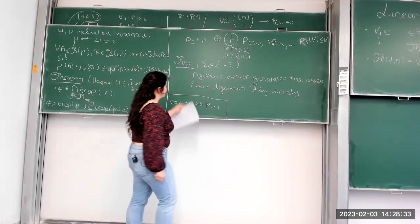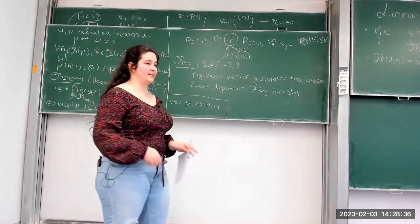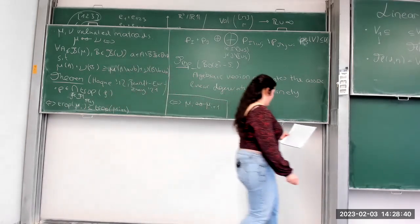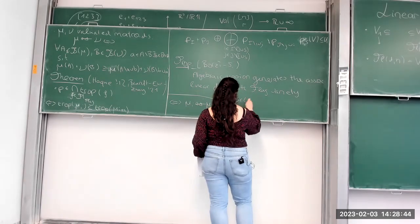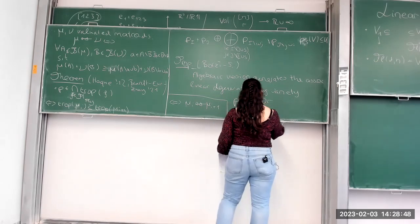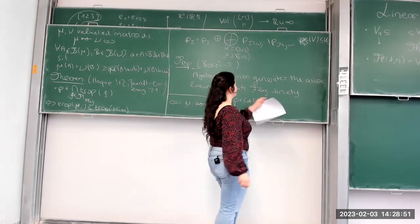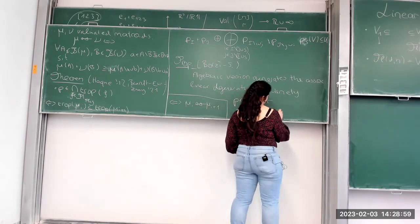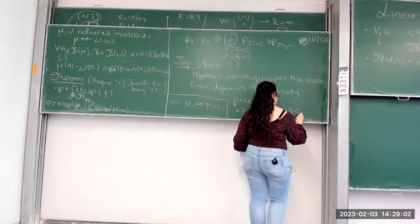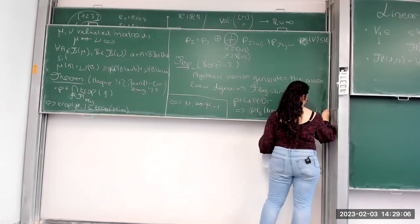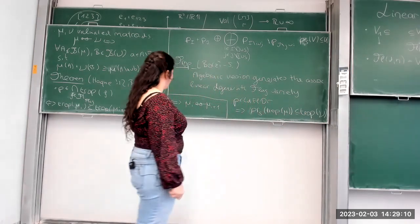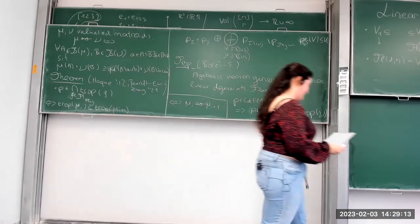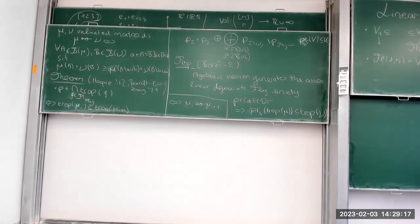What we want to do with these Plücker-type relations is make them describe something that makes sense in the matroid setting and in the tropical setting. We want to show that if we have a point in this linear degenerate flag variety, then the associated tropical spaces are contained inside a tropical projection. Specifically, the projection S of tropical mu_i is contained inside tropical mu_{i+1}. But finding an intrinsic valuated matroid analog of what this is supposed to mean is a little bit more complicated.